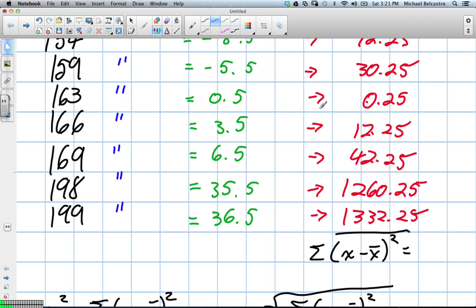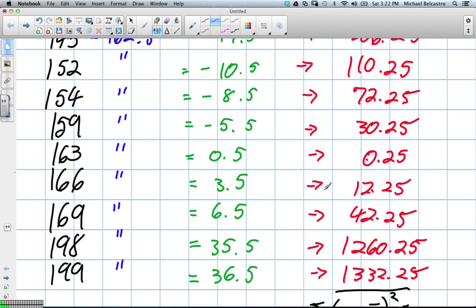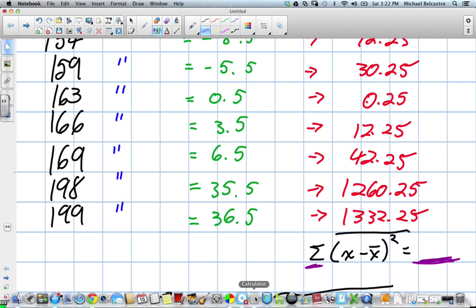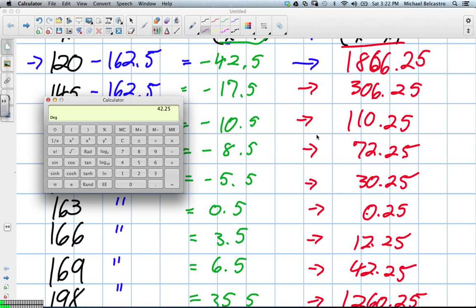So, now that we've done all this, we've got to take all of these values, and we have to find the sum of them. We're going to sum them up all here. We're going to add all of these things together. That's what that means, the sum of all of those values. So, take our calculator, and we'll try to sneak through this. You try to follow along with me. 1,806.25 plus 306.25 plus 110.25. 1,332.25.